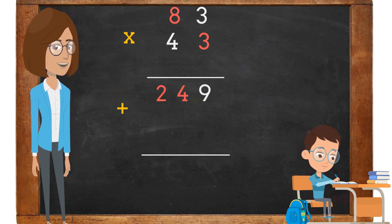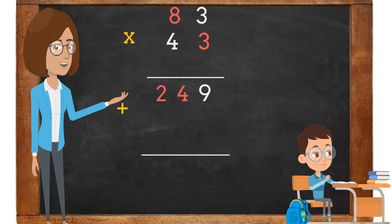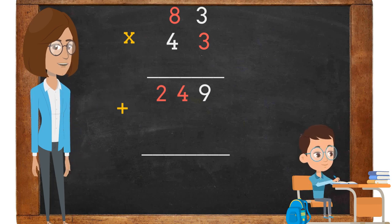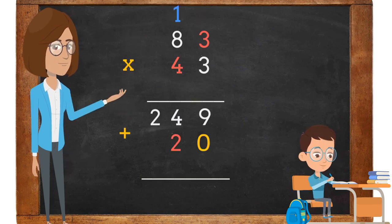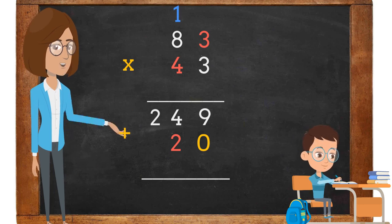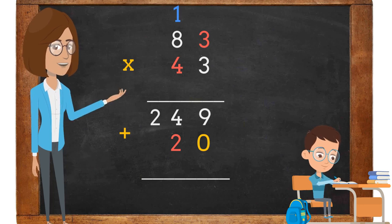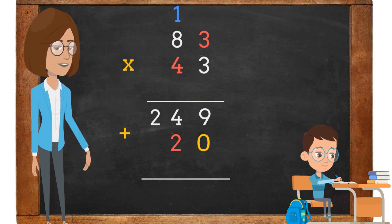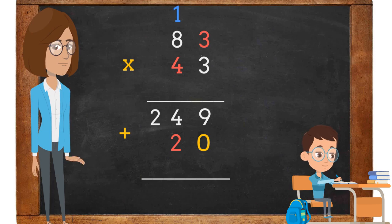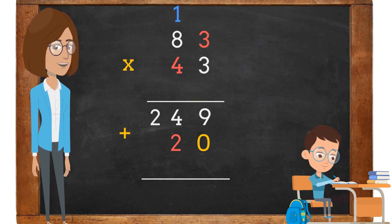The 4 goes in the tens place and the 2 goes in the hundreds place. We are going to place a 0 under the 9 in the ones place, because we are going to start multiplying using the 4 in the tens place. 4 times 3 is 12. We must place the 2 in the tens place next to the 0, and carry the 1.